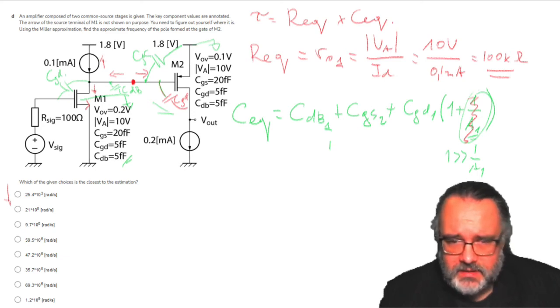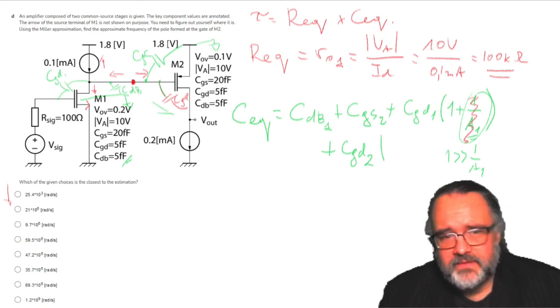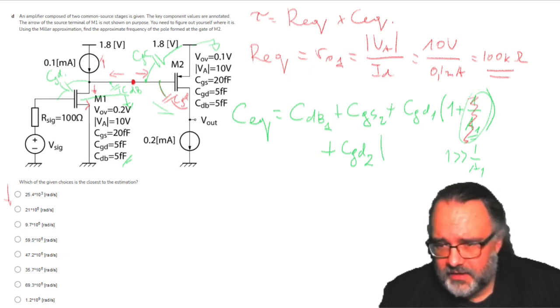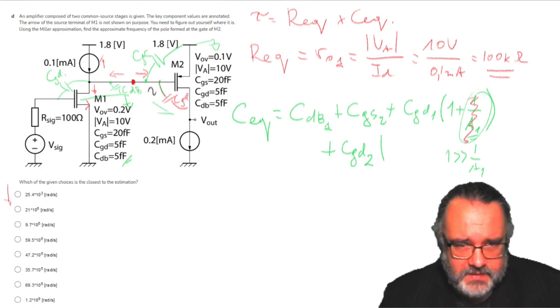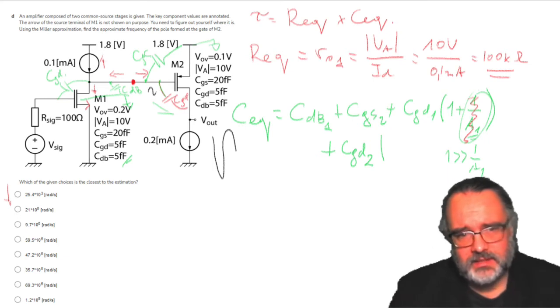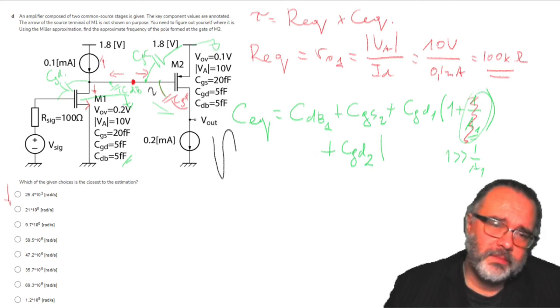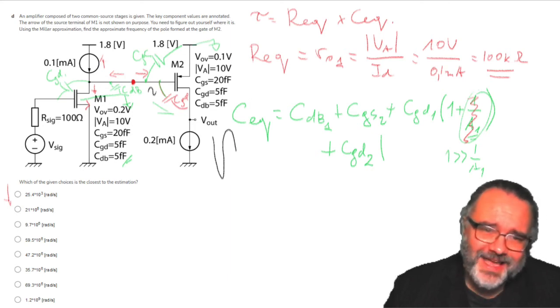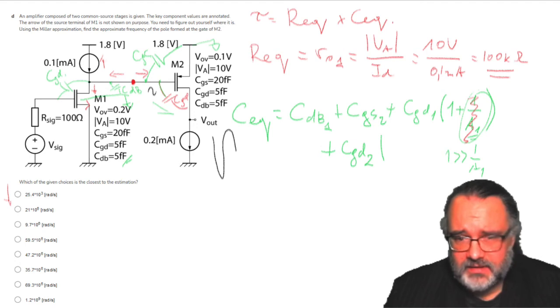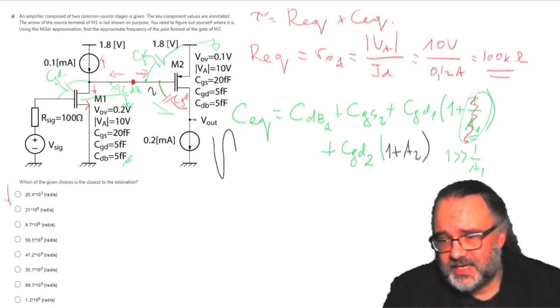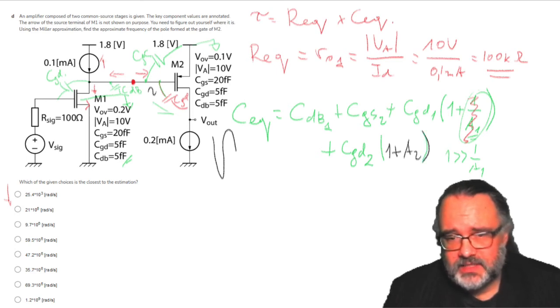Now this is the main point: C gate drain of M2 has the Miller effect. If we have a signal here, this signal will be multiplied by the gain of the second stage, so the effective capacitance that you see here to ground will be multiplied by the gain of this stage. This is the Miller effect. What I will have here is C gate drain times 1 plus A2, where A2 is the gain of the second stage.